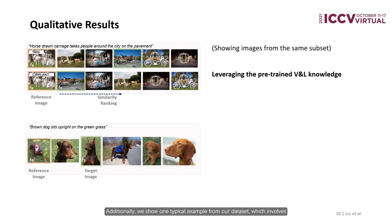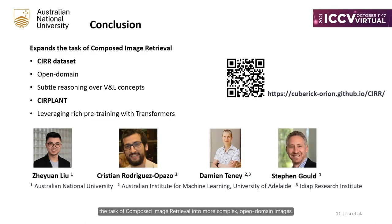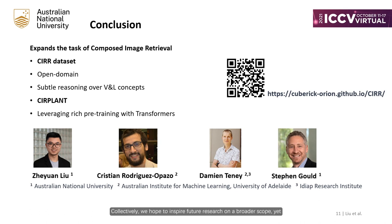Additionally, we show one typical example from our dataset which involves an implicit requirement of preserving the same breed of dog across the images. This requires models to identify subtle vision and language cues — in this case, the pointy ears — and retrieve the most suitable image. Such examples bring more challenge to the task. To conclude, we expand the task of composed image retrieval into more complex open-domain images, introduce new datasets that place more emphasis on subtle reasoning over vision and language concepts, and propose a transformer-based model that leverages large-scale pre-training. Collectively, we hope to inspire future research on a broader yet fine-grained level. Thank you for watching.